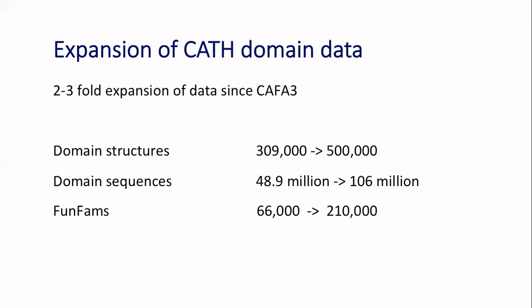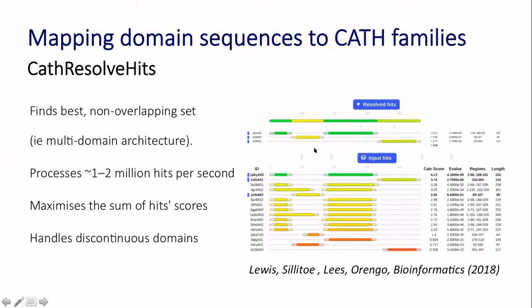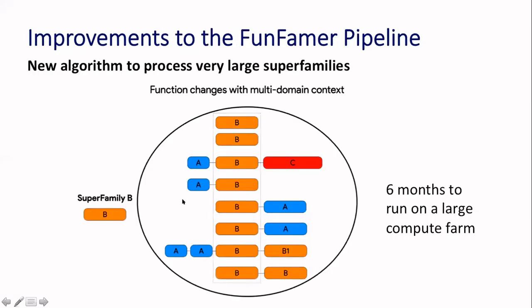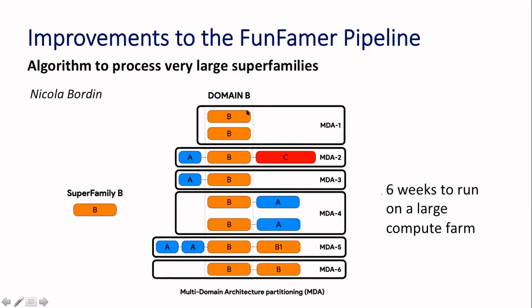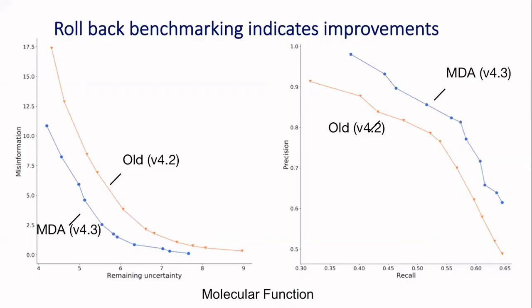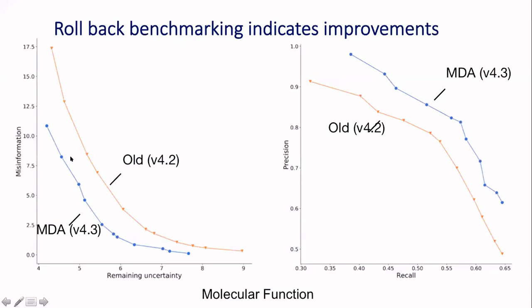We've also improved the accuracy with which we map sequences into our families. It's an optimization algorithm — not going into too much detail because it's published — but with a query sequence we work out where the different domain families lie and optimize by looking for the maximum sum of HMM score. We've also optimized the algorithm by partitioning large superfamilies into different multi-domain partitions, which speeds up the algorithm massively — from six months to six weeks — and also seems to improve accuracy by our benchmarking.